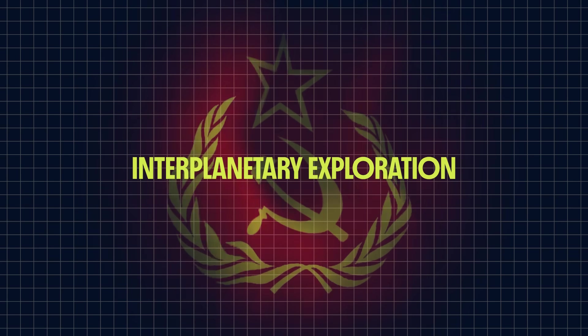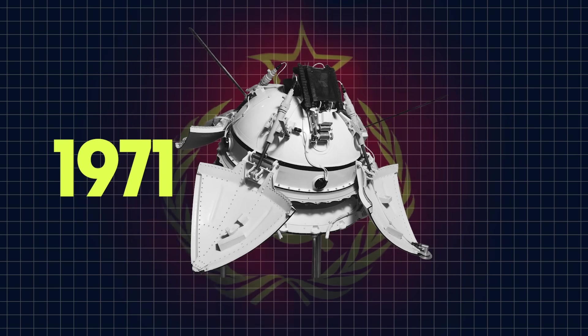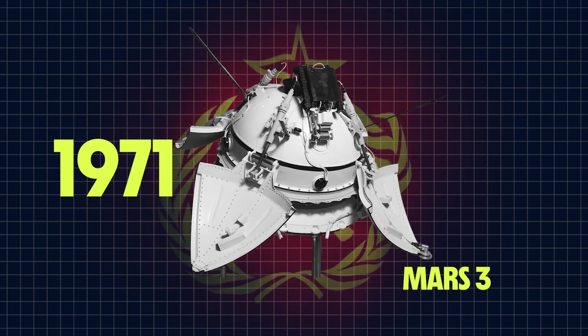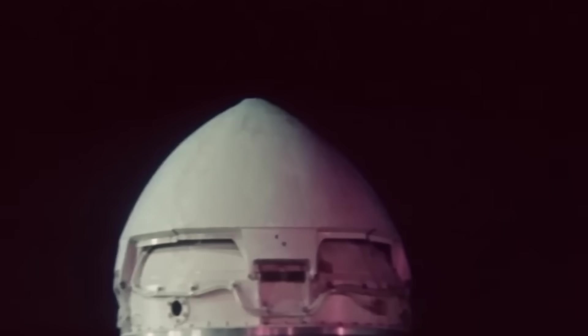This is the direction the Soviet Union would pivot with their space program in the 1970s. Interplanetary exploration. In 1971, they launched a probe that would achieve the first ever soft touchdown on the surface of Mars. The lander only operated for about 20 seconds before going completely dead, but it was still a major accomplishment.